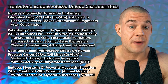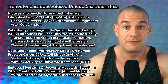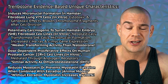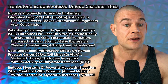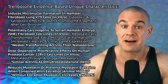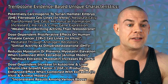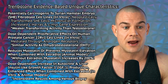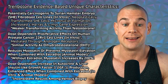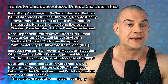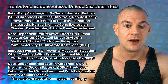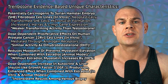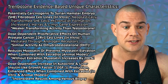Trenbolone induces micronuclei formation in hamster fibroblast lung V79 cells. In these cells, Trenbolone has a cytotoxic but also genotoxic effect, resulting in broken chromosome fragments after cell division. Trenbolone potentially has carcinogenic effects to Syrian hamster embryo fibroblast cell lines, neoplastically transformed the cells, causes micronuclei formation, and increased expression of genes related to cancer.